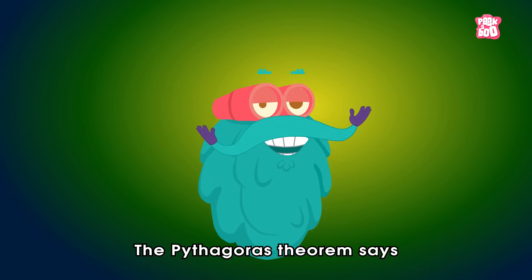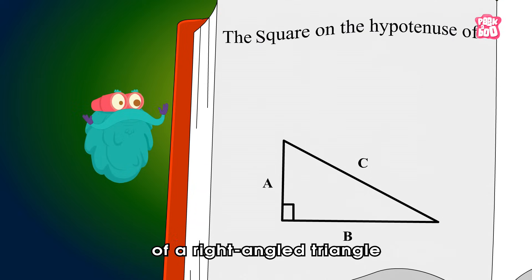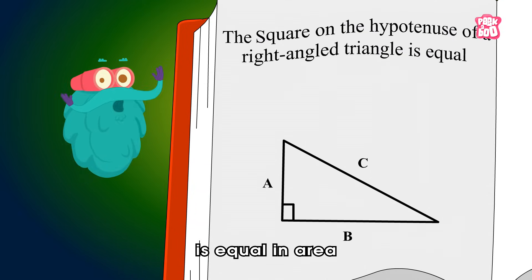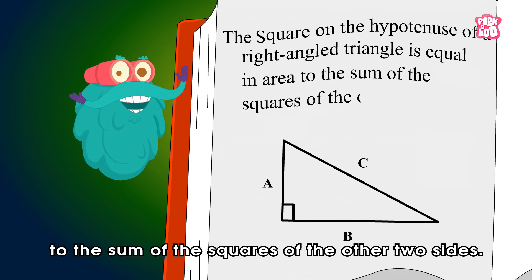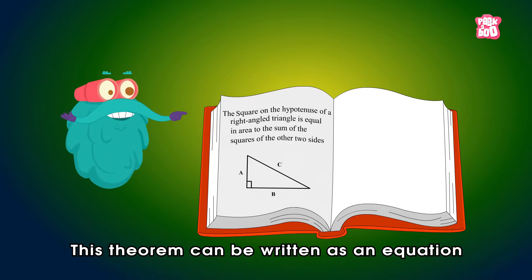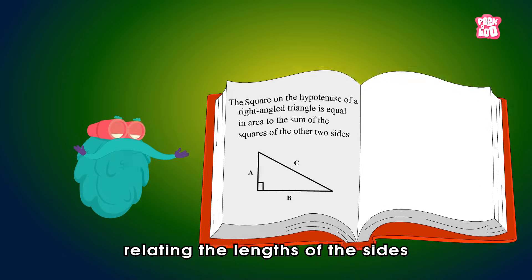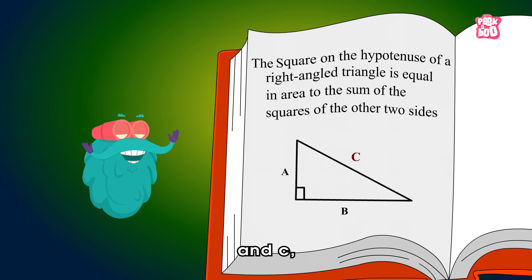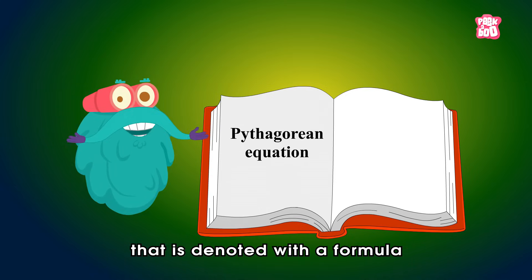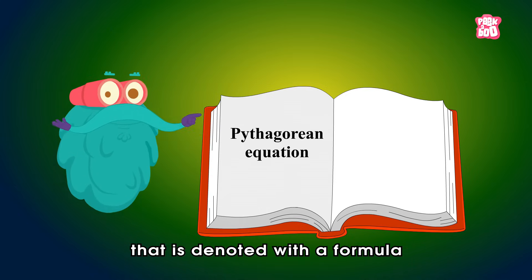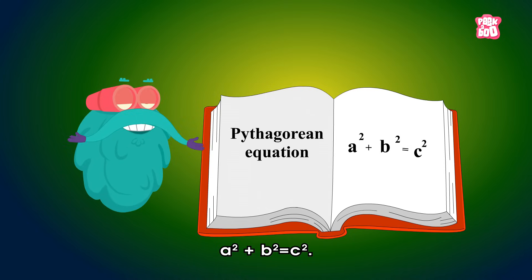The Pythagoras theorem says that the square on the hypotenuse of a right-angled triangle is equal in area to the sum of the squares of the other two sides. This theorem can be written as an equation relating the lengths of the sides A, B and C, often called the Pythagorean equation, that is denoted with the formula: A square plus B square is equal to C square.